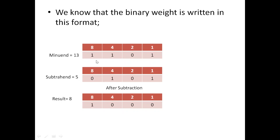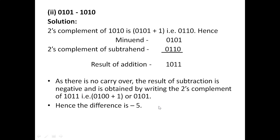We all know the binary weights are written as 8, 4, 2, 1. Our minuend was 1101, which indicates 13 in the decimal number system. The subtrahend 0101 — since 1 is written below 4 and another 1 is written below 1, adding those gives 5. So we are subtracting 5 from 13 and we get the result 8.